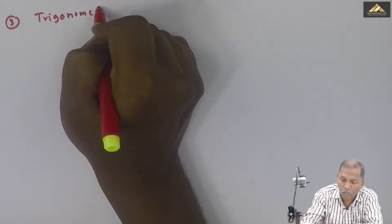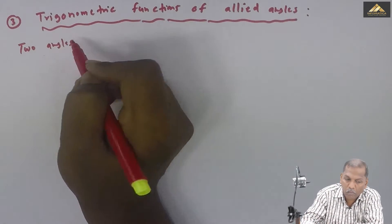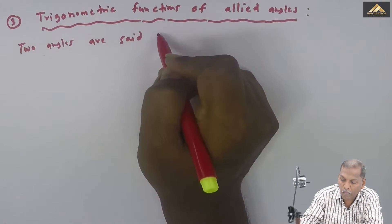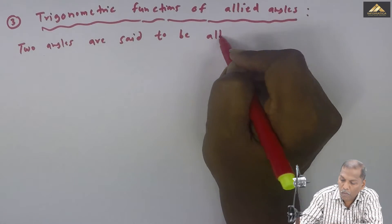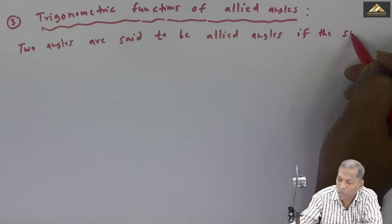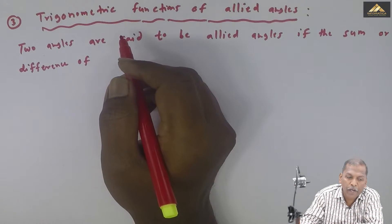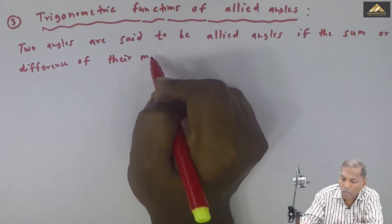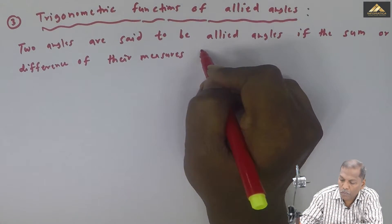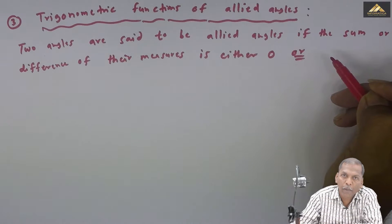Now we will see the third topic: trigonometric functions of allied angles. Two angles are said to be allied angles if the sum or difference of their measures is either 0 or an integral multiple of pi by 2.